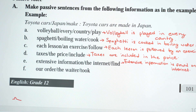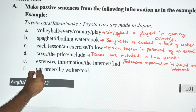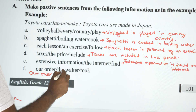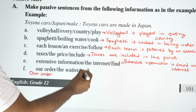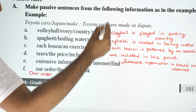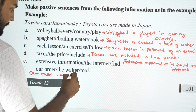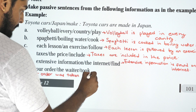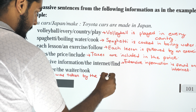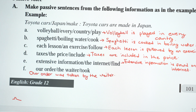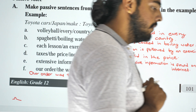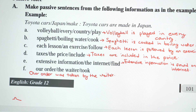Our order — the waiter — took. So, our order was taken by the waiter. 'Took' is past tense, that's why we use 'was taken'. Our order was taken by the waiter.